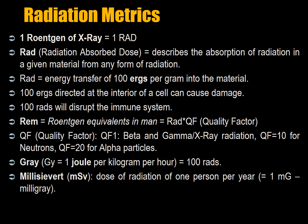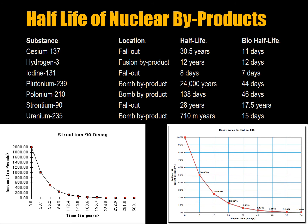A gray is one joule per kilogram, and it's the equivalent of 100 rads. A millisievert is a dose of radiation equal to one milligray.